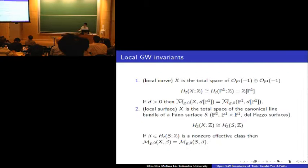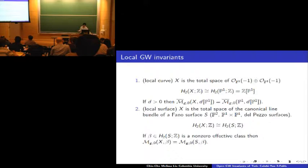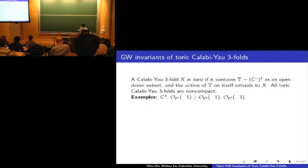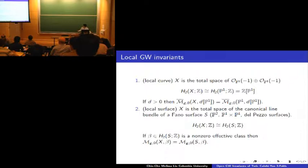Similarly, you can consider local surfaces. Let X be the total space of the canonical line bundle of a del Pezzo surface — there are only 10 of them. The second homology group of X is isomorphic to the second homology group of the base. If you take any non-zero effective class, these two moduli spaces are identical. The right-hand side is compact because S is. So we can still define Gromov-Witten invariants for this non-compact Calabi-Yau threefold for any genus and any non-zero degree.